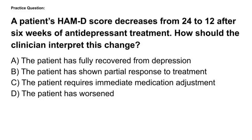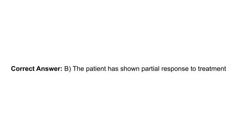Practice question: A patient's HAMD score decreases from 24 to 12 after 6 weeks of antidepressant treatment. How should the clinician interpret this change? A. The patient has fully recovered. B. The patient has shown partial response to treatment. C. The patient requires immediate medication adjustment. D. The patient has worsened. The correct answer is B. A reduction in HAMD score by at least 50% is considered a partial response. A score of 12 indicates mild depression, meaning further treatment optimization may be needed.